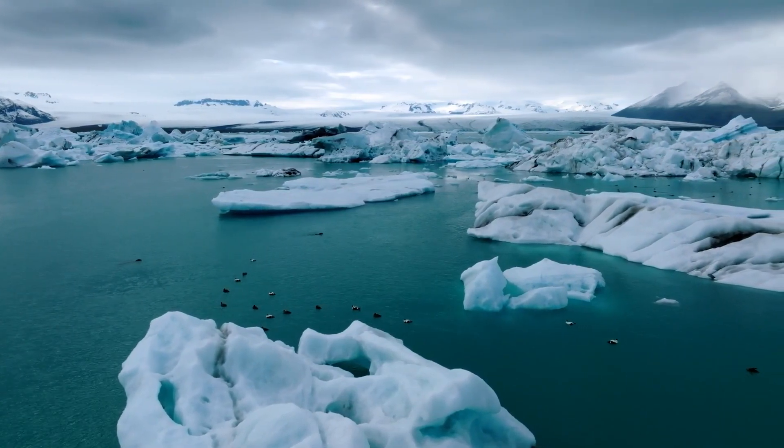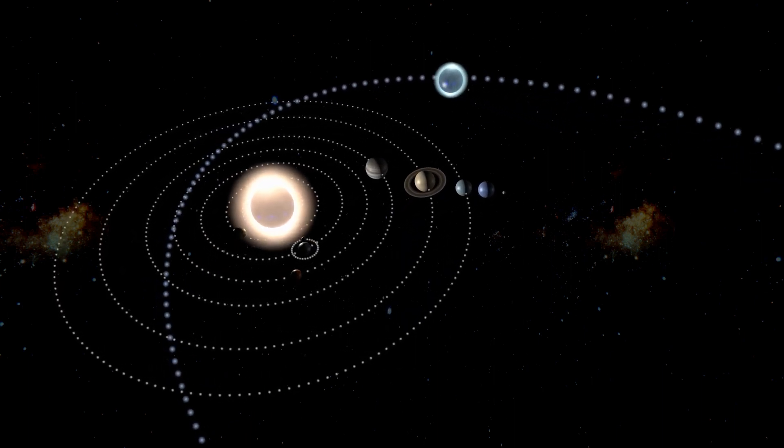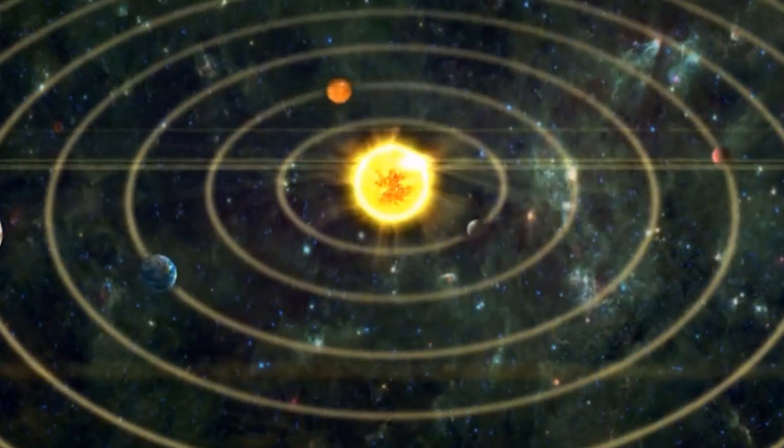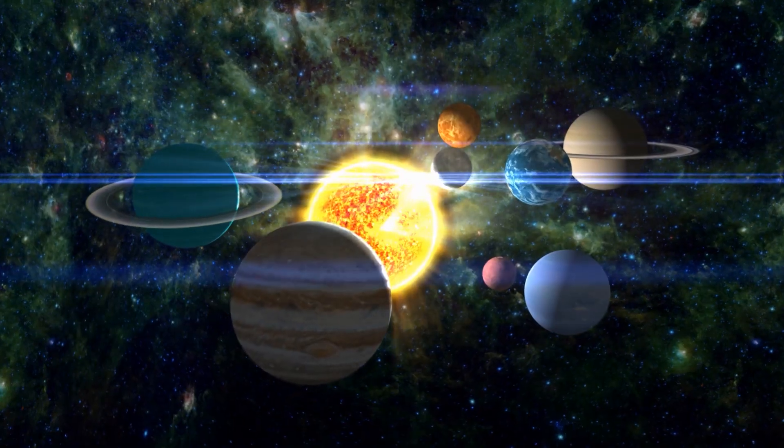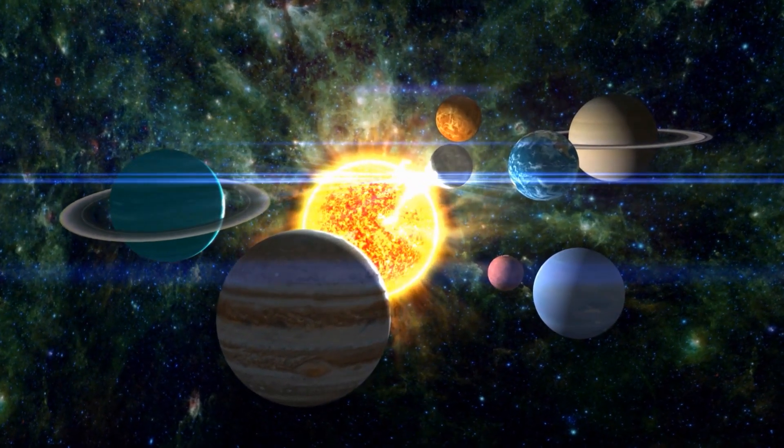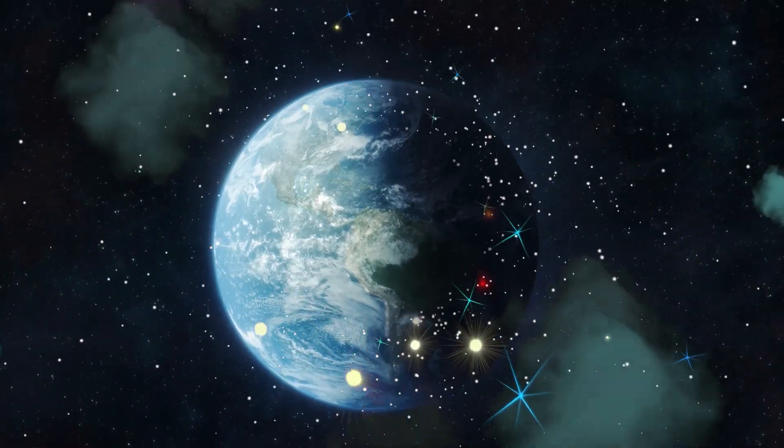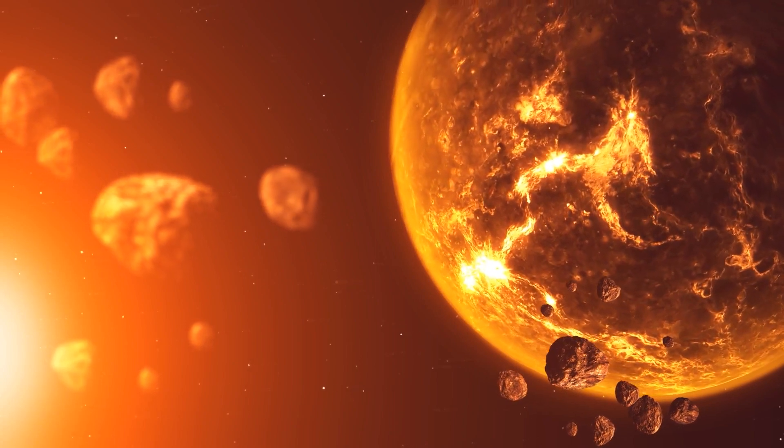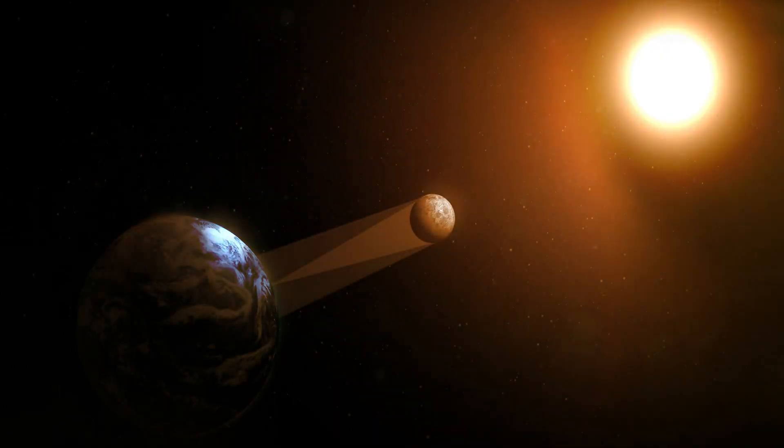Currently, Earth reaches its closest point to the sun (the perihelion) in early January during the southern hemisphere summer, and the aphelion (the farthest point) in early July. The difference in distance at those two points is about 3.2 million miles (5.1 million kilometers), which is only about 3.5 percent of the average sun-to-earth distance.